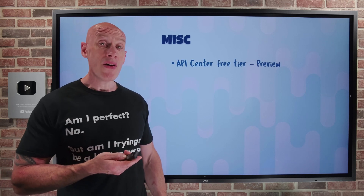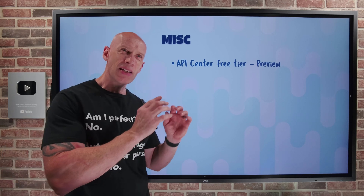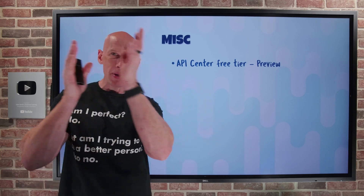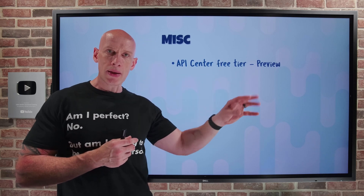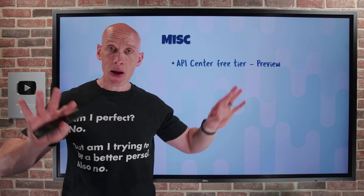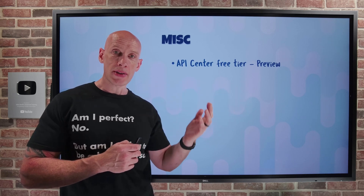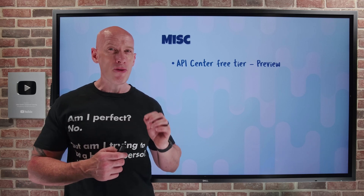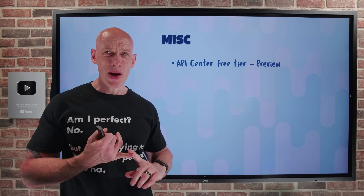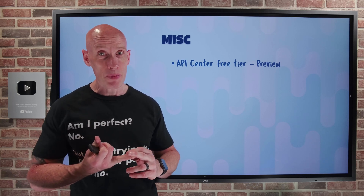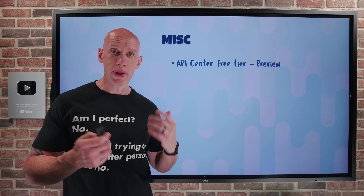API Center now has a free tier in preview. API Center — which is more of a development-time tool, as opposed to API-M which is the runtime — is that inventory, discovery, and management hub for any API or MCP server used by your organization. There was previously a 90-day free trial, but now it's a permanent free tier supporting around 200 APIs with five versions each, which is less than the standard plan. Check the docs for full limits.